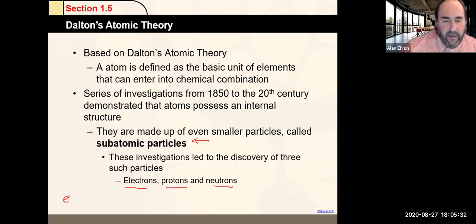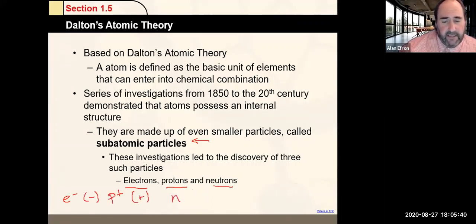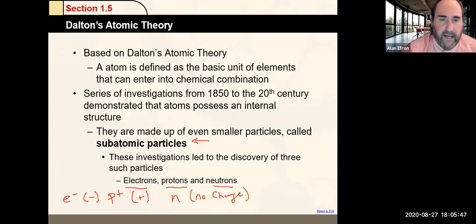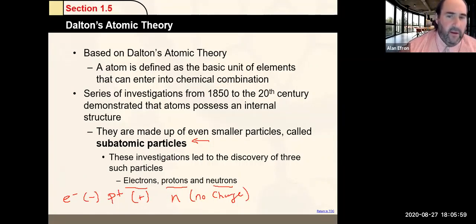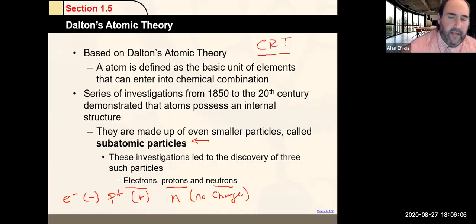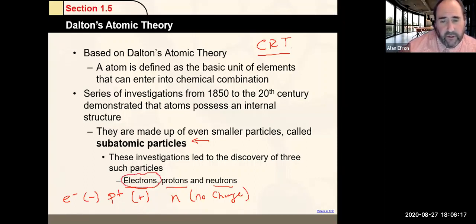Electrons are negatively charged, with a negative one charge. Protons are positively charged. Neutrons have no charge. Many experiments were done to understand the nature and structure of an atom. A major advancement came with the development and use of the CRT — the cathode ray tube. This really helped us understand electrons.